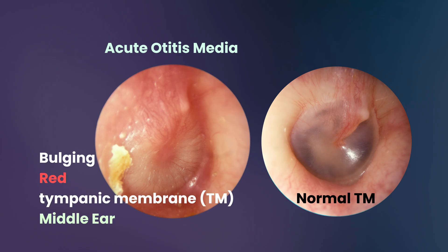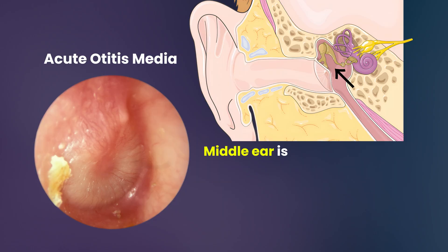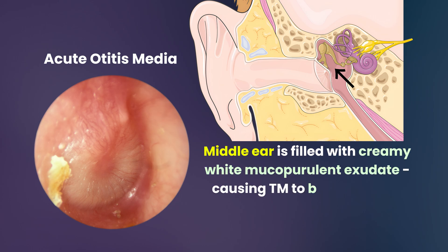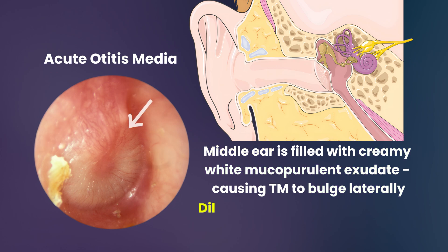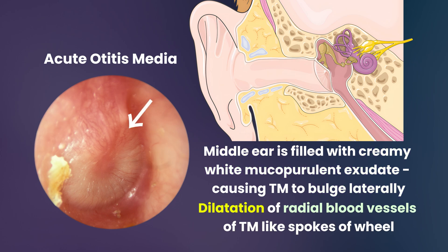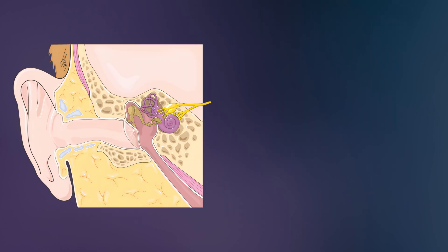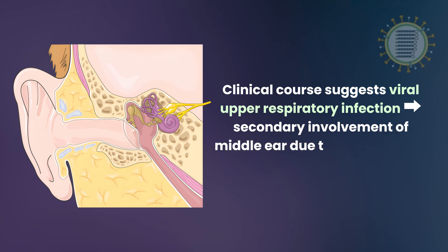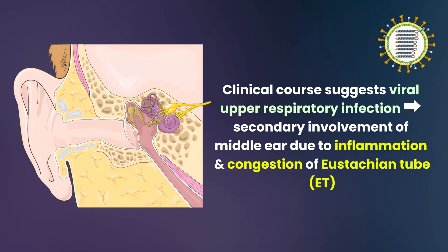The bulging red tympanic membrane is a sign of middle ear infection. The middle ear is filled with a creamy white mucopurulent exudate, which is causing the tympanic membrane to bulge laterally. Note the dilatation of the radial blood vessels of the tympanic membrane, which appear like the spokes of a wheel. The clinical course suggests a viral upper respiratory infection leading to secondary involvement of the middle ear due to inflammation and congestion of the eustachian tube.